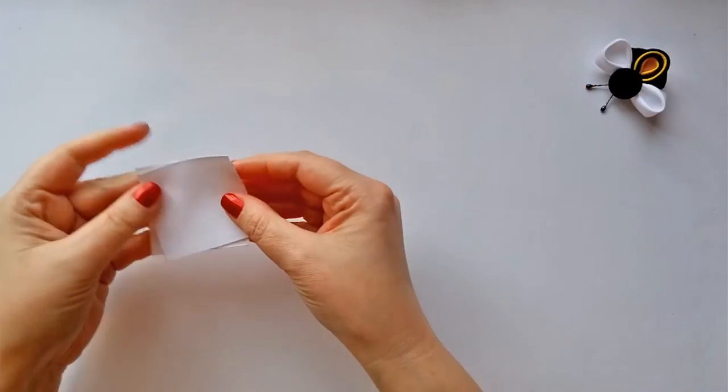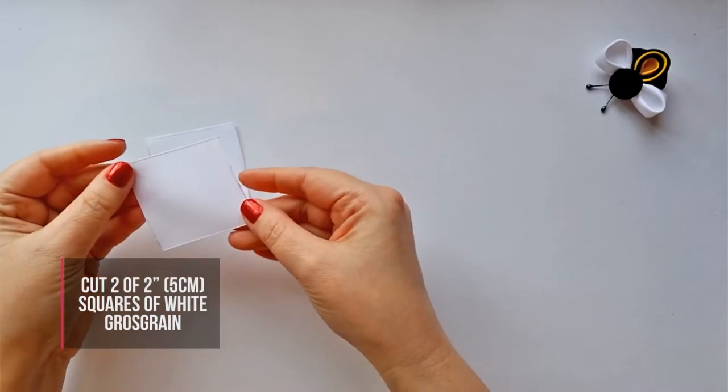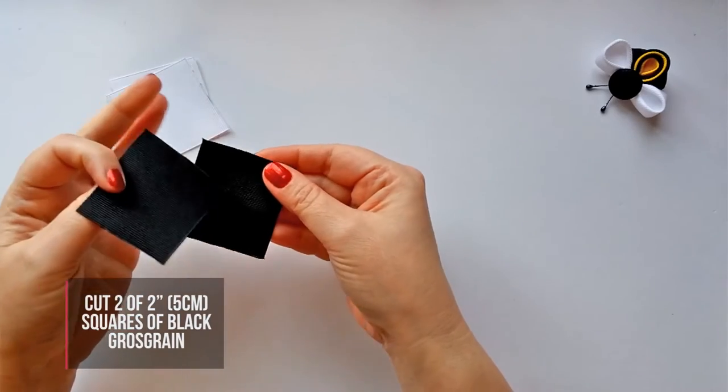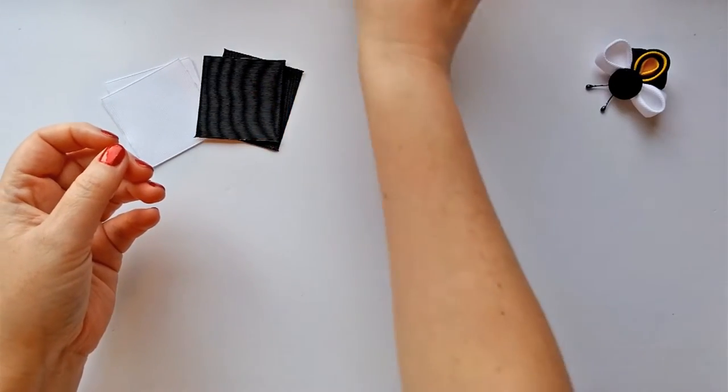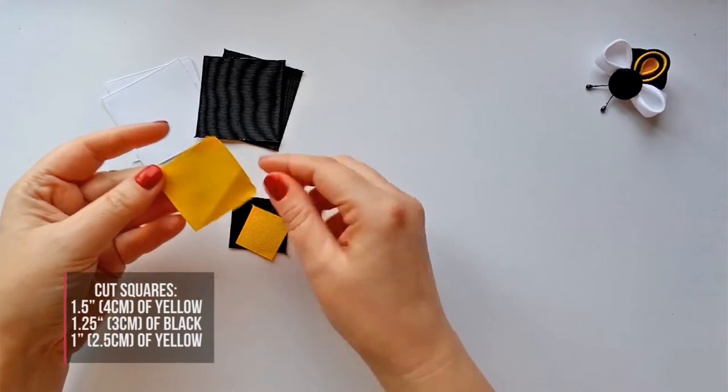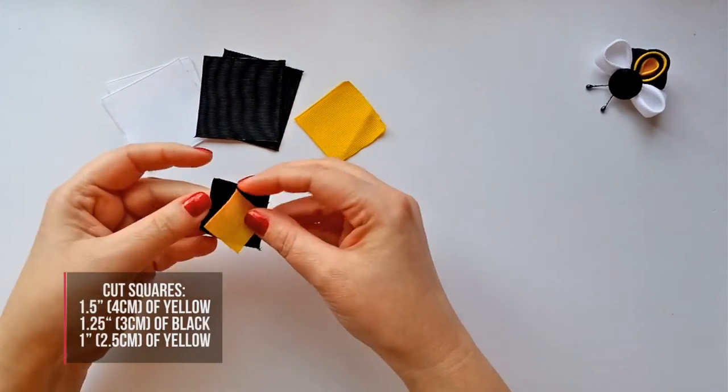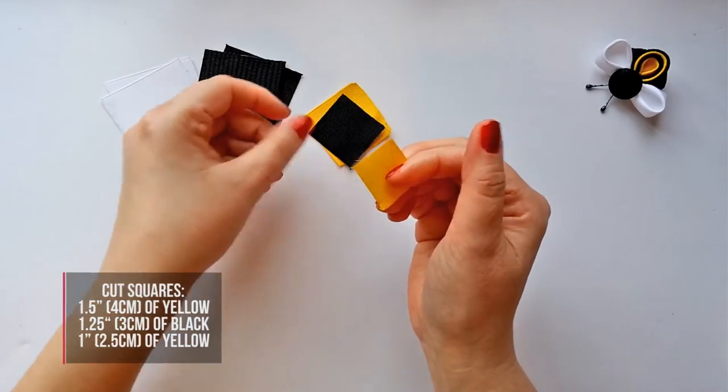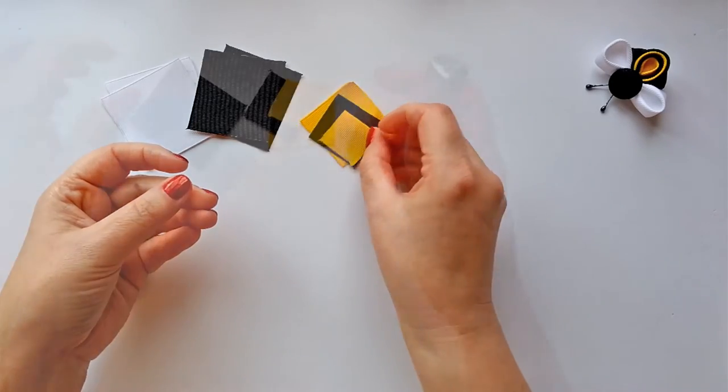From your white grass grain ribbon, cut two 2 inch by 2 inch or 5 centimeter by 5 centimeter squares, then cut two 2 inch or 5 centimeter squares from your black grass grain, then you'll need a 1.5 inch or 4 centimeter square from your yellow, a 1.25 inch or 3 centimeter square from your black, and a 1 inch or 2.5 centimeter square from yellow.